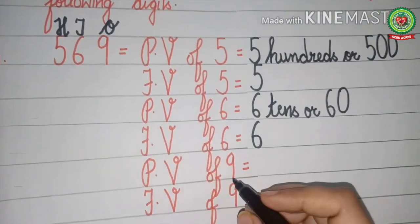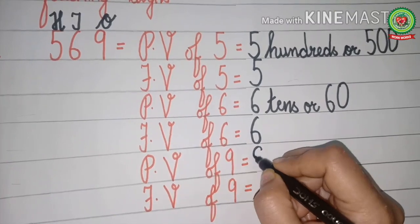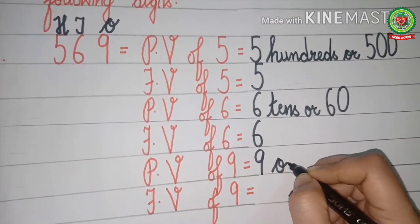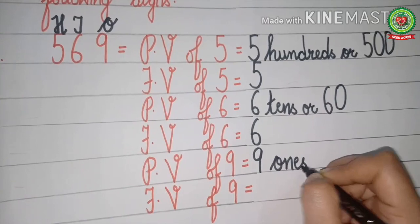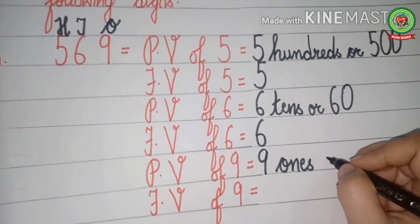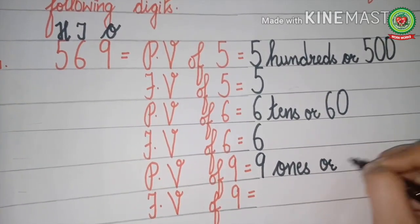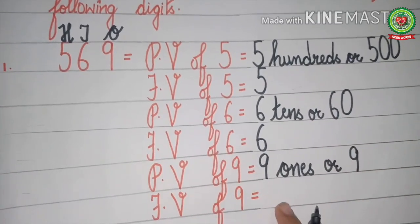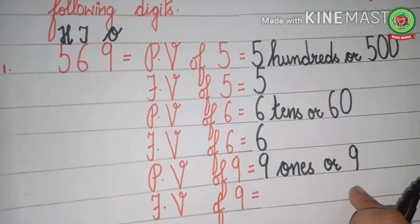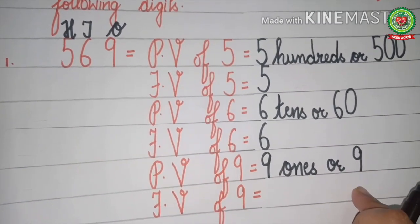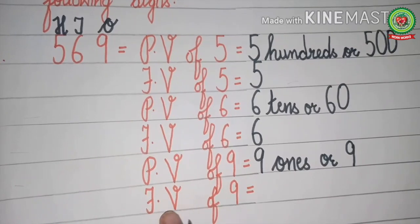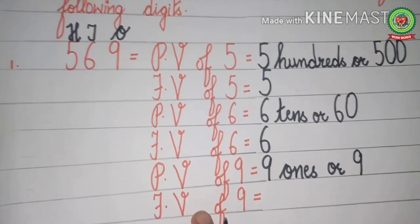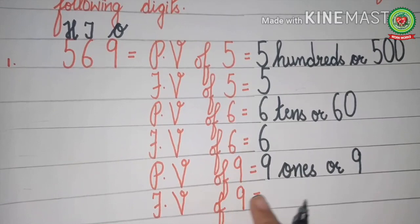So the place value of 9 is nine ones. Spell 'ones' — O-N-E-S. Ones has no zero, so we do not write any zero with 9. The face value of 9 is 9.